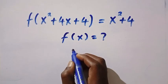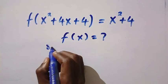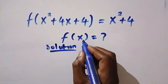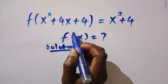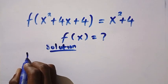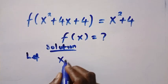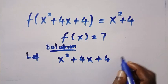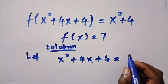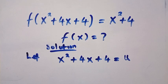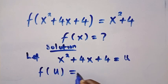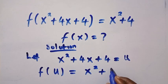Note that x here is a member of the real numbers, and we are trying to provide a solution to this problem for f of x, given these bunches of domain. So, suppose I let x squared plus 4x plus 4 be equal to another letter u. We therefore have f of u equals x squared plus 4.